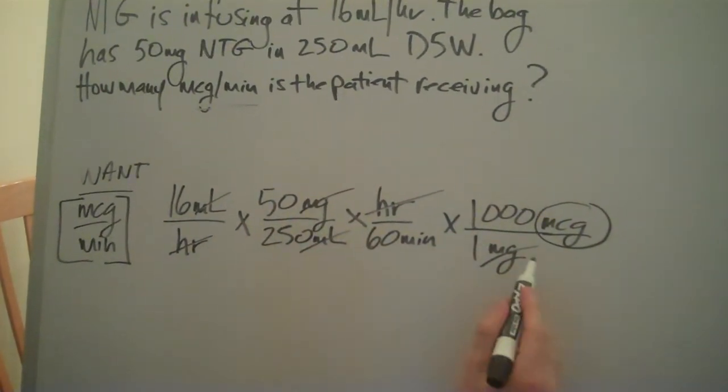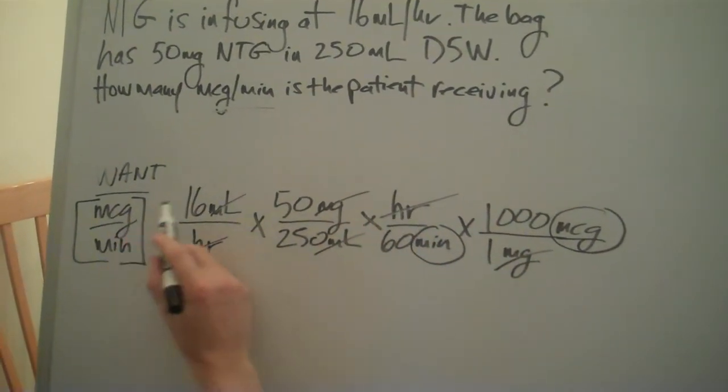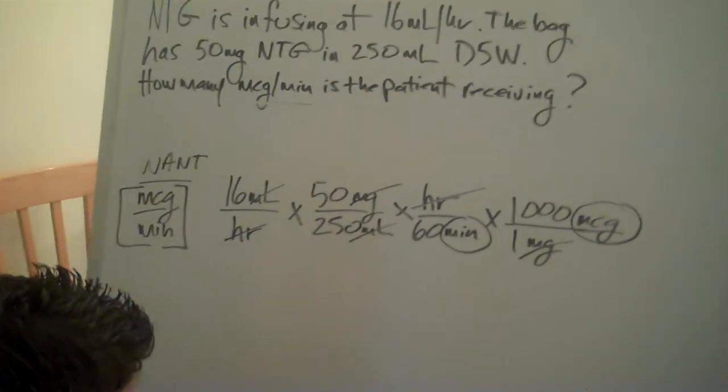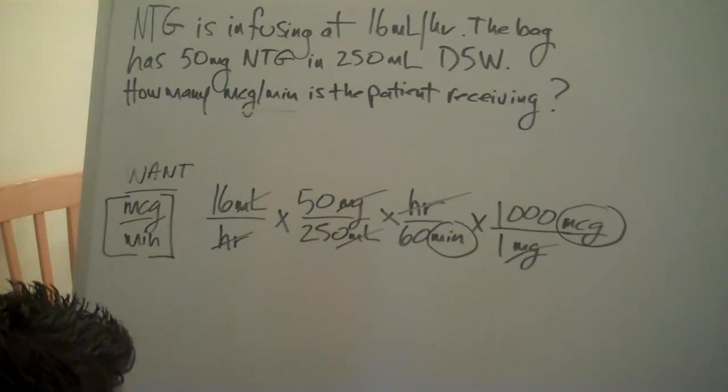We want minutes. Everything's crossed off. This is what we have. Now it's a matter of multiplication, and I'm going to cheat. Hopefully you do not. So we have 16 times 50 times a thousand.